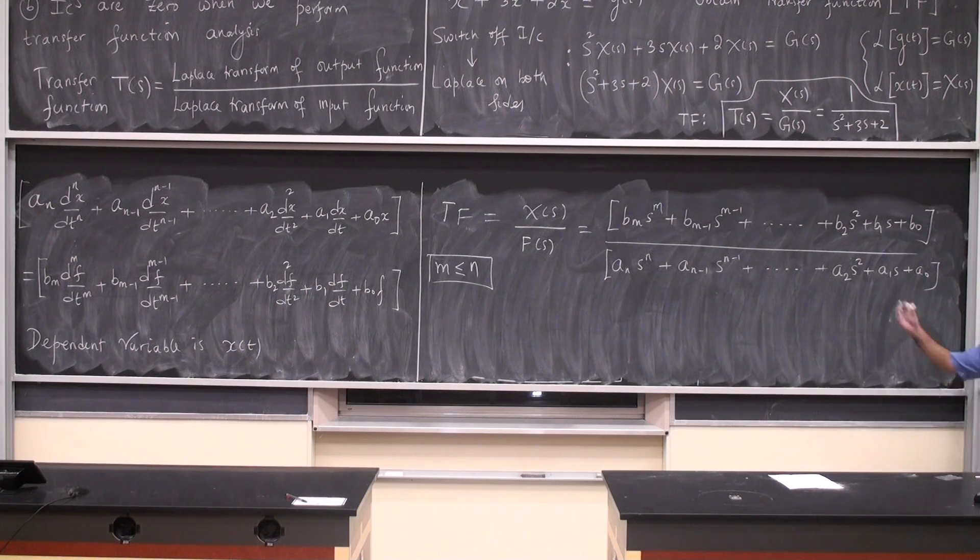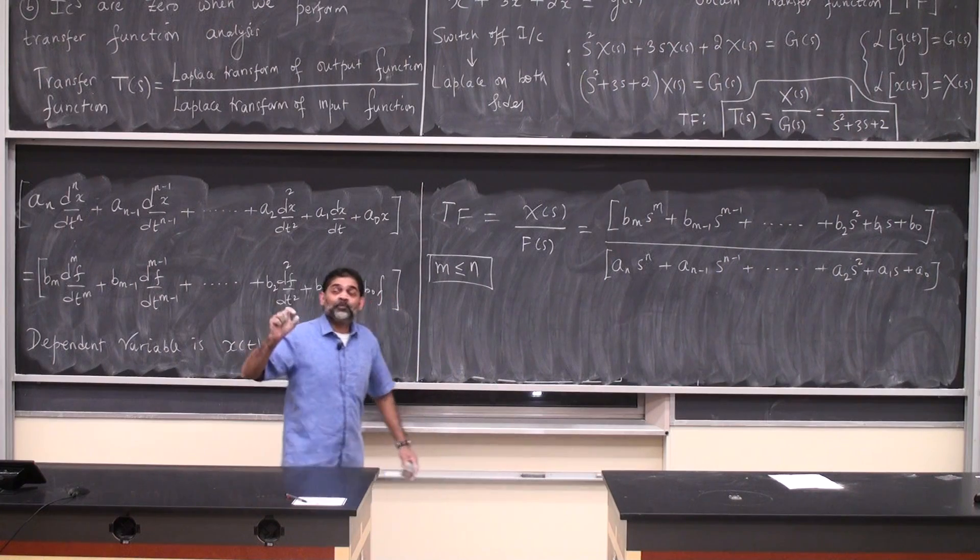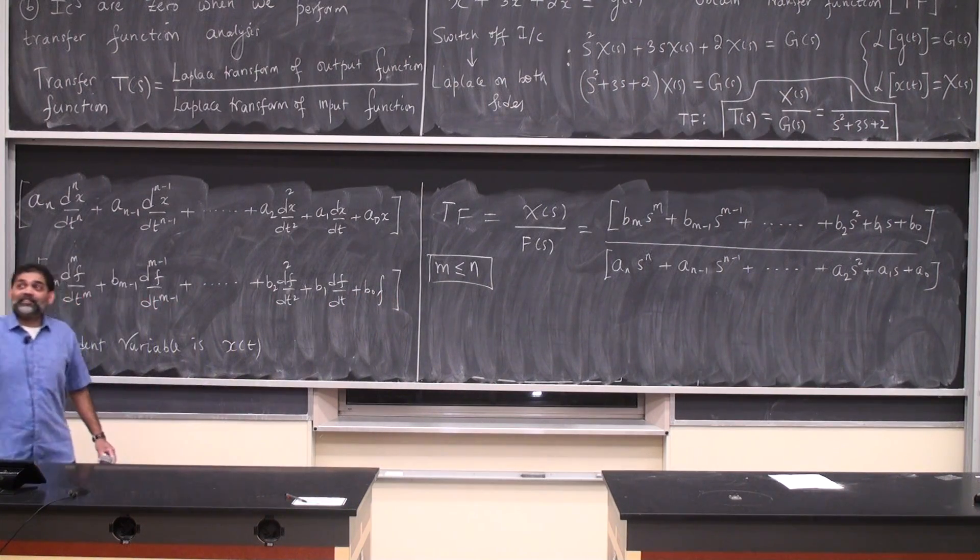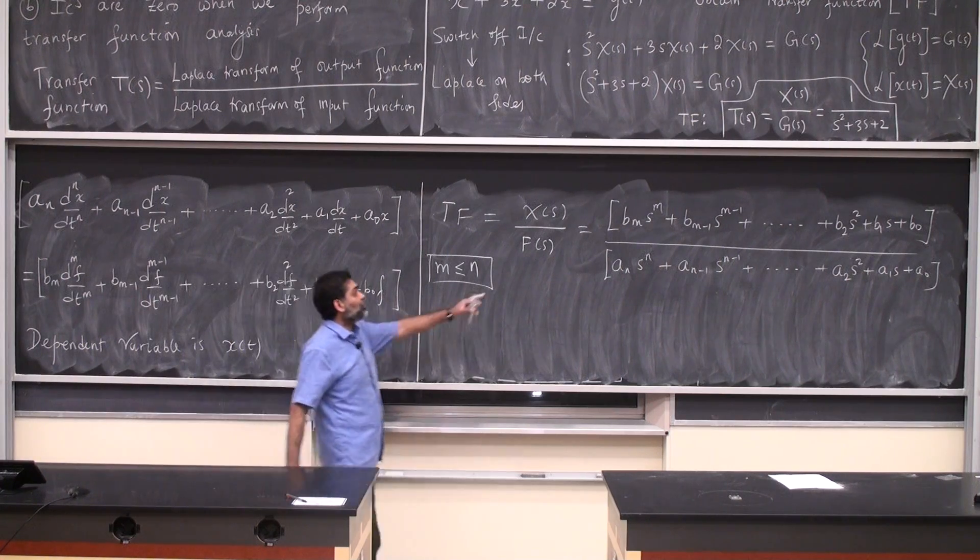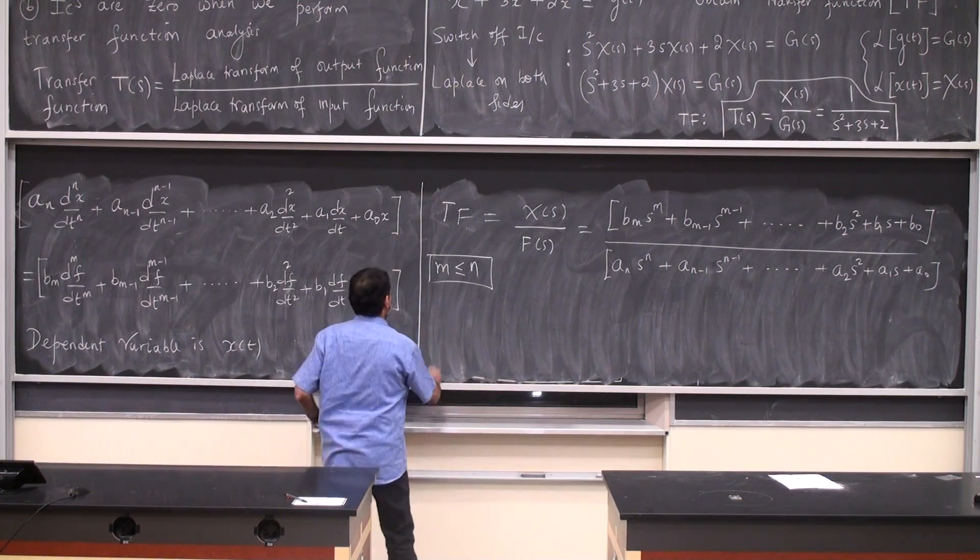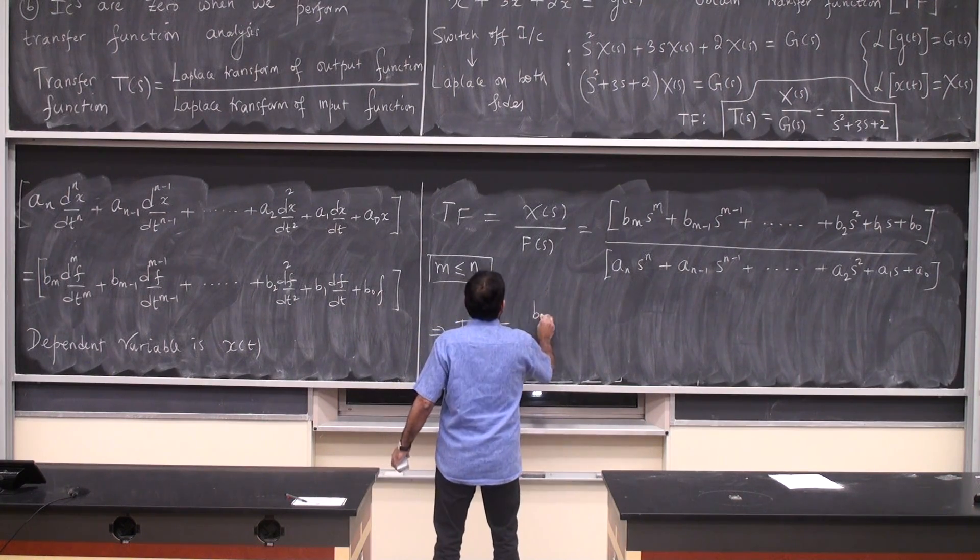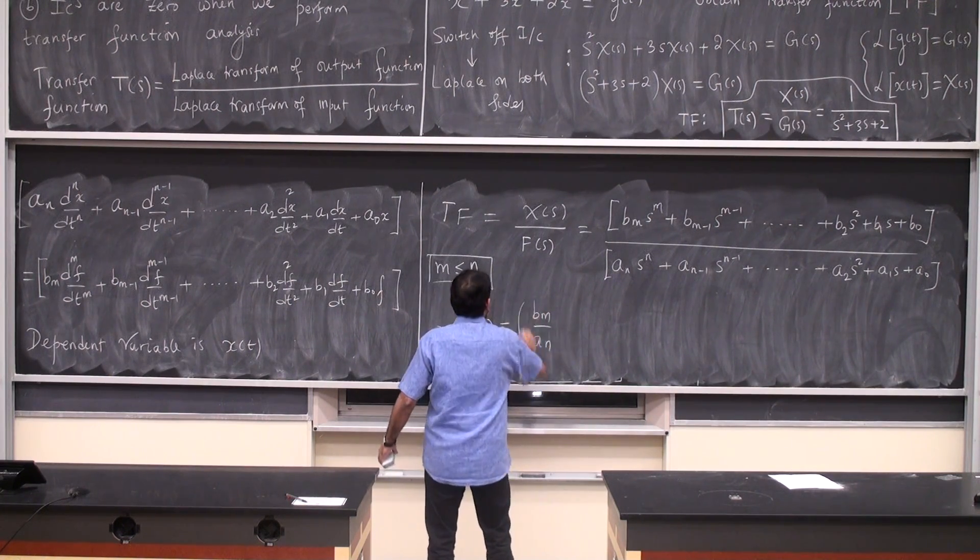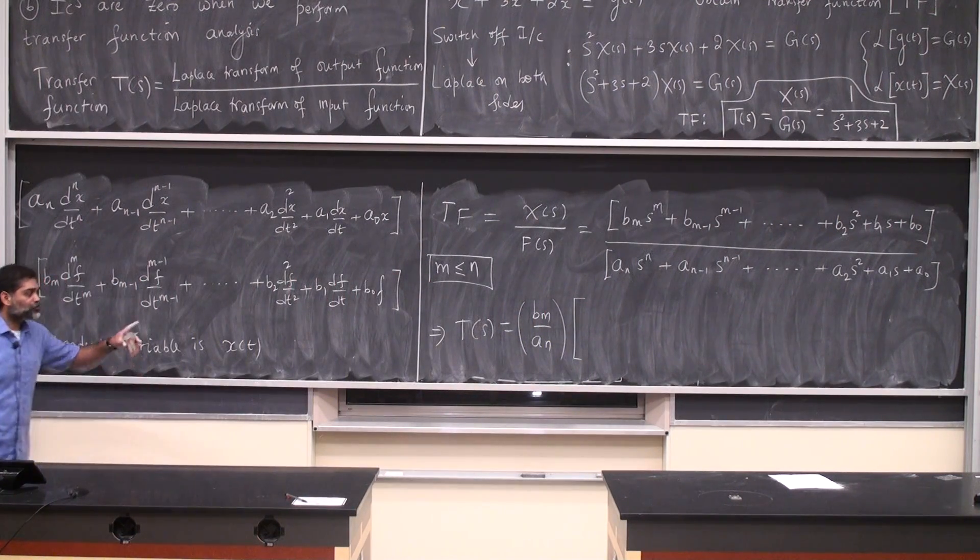This is the typical transfer function, but you can simplify this. What do we typically do? The coefficient accompanying the highest degree has to be one, so I take the b_m out, I take a_n out, and I write the transfer function as b_m by a_n. I'm going to revisit this topic in the next class, I just want to write this down.